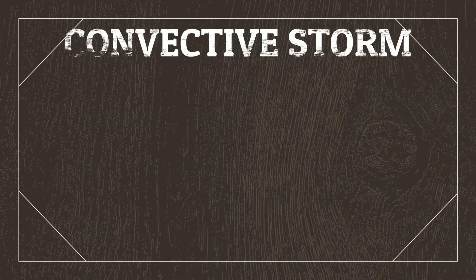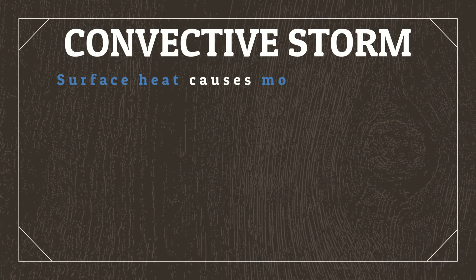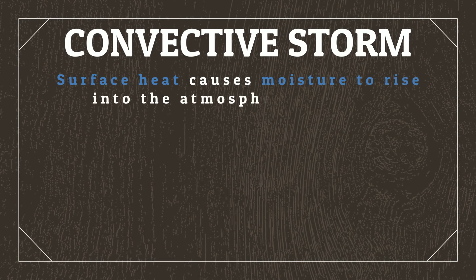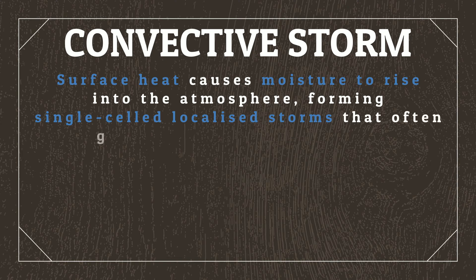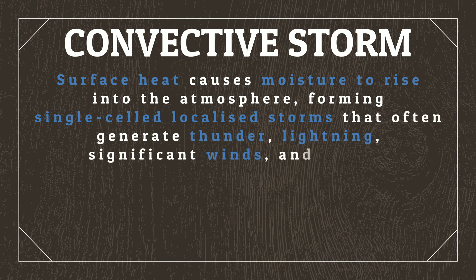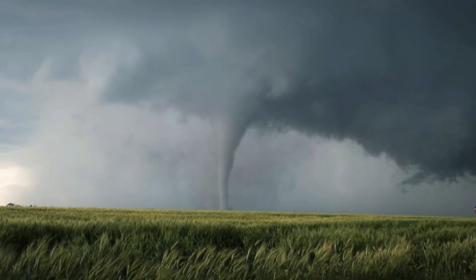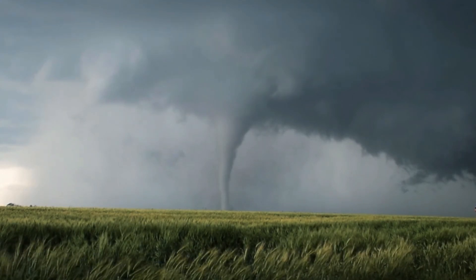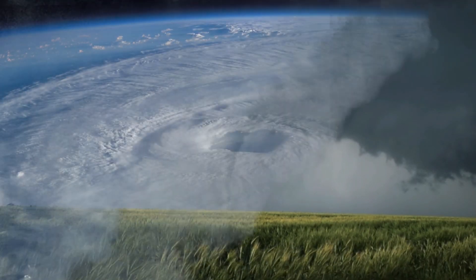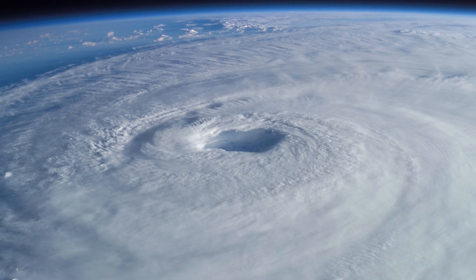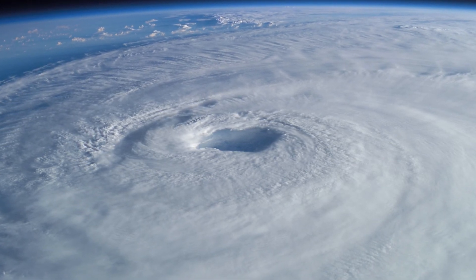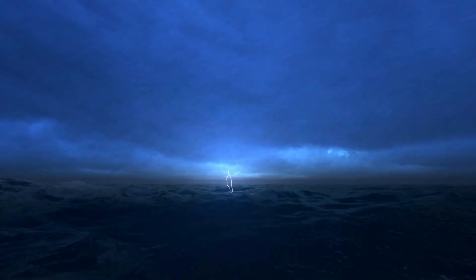A convective storm is a storm formed when surface heat causes moisture to rise into the atmosphere, forming single-celled, localized storms that often generate thunder, lightning, significant winds, and sudden temperature changes — which is the perfect recipe for tornadoes. Add to this that the humid subtropical climates are right in line for tropical cyclones that form over the ocean, and these regions can be regularly battered by extreme weather conditions.